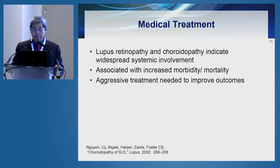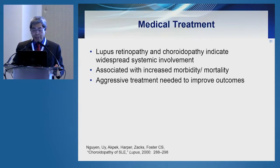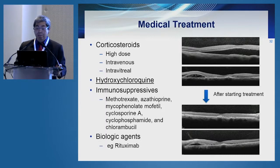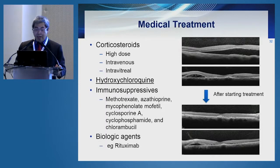Medical treatment is very important for lupus retinopathy, not just for the eyes but also for the systemic disease, because SLE is associated with increased morbidity and mortality. If we can treat patients early, we'll be able to save some patients' vision and also save some patients' lives. Early on, we like to treat aggressively with high-dose corticosteroids, sometimes given intravenously, and for severe ocular disease, given intravitreally.